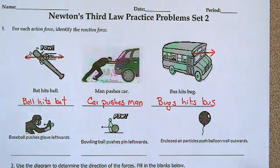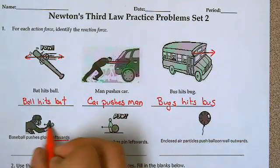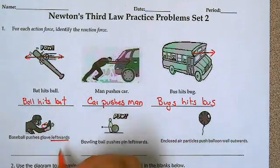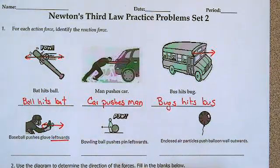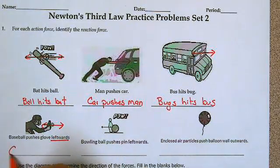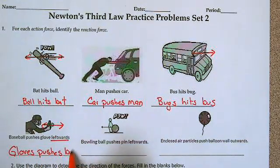The next one: the baseball pushes the glove leftwards. So the opposite is going the other way — the glove pushes the ball rightwards.